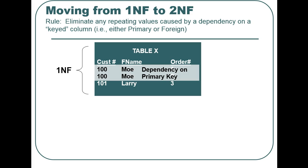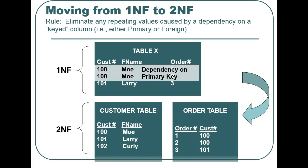Therefore, we break the table into two tables: a customer table and a separate order table. Customer number repeats in the order table; however, the repeating values are not linked or dependent on the primary key in the order table.